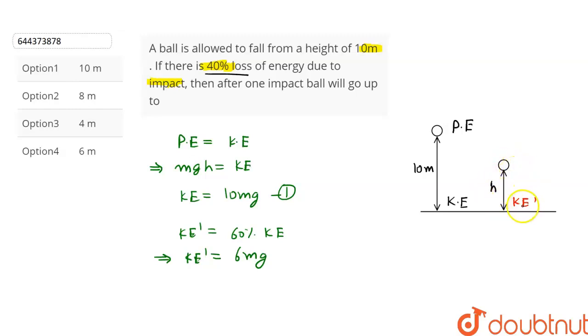That PE dash will be equal to mgh, which is further equal to the kinetic energy at this point, which is KE dash. Let's put the value of KE dash in this equation. This will give us mgh is equal to 6mg. mg gets cancelled and we get h is equal to 6 meters.